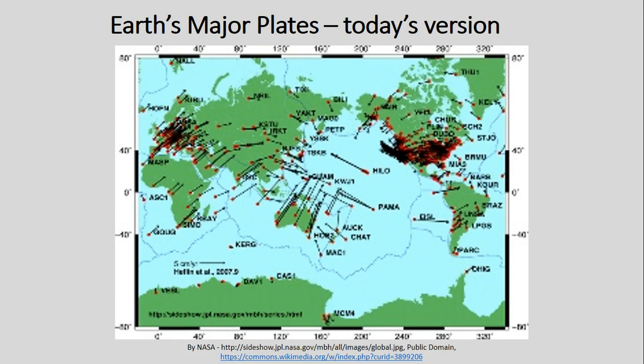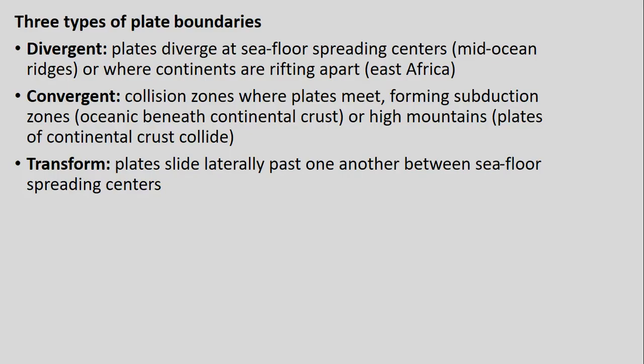A map shows the direction of movement of different plates based on individual measurements made across many of them. They're not all moving in the same direction — they have different magnitudes and amounts of movement, usually within millimeters or centimeters per year. That's very small per individual year, but over millions and hundreds of millions of years, those millimeters and centimeters add up to very large distances.